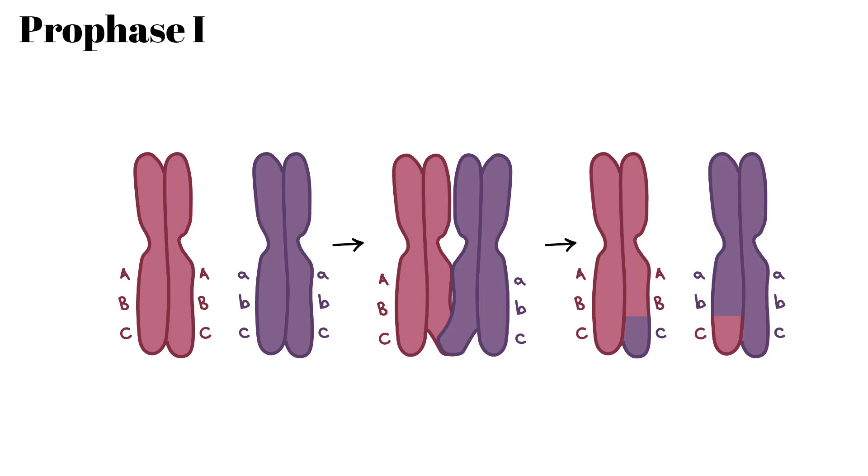Once the cell is done with interphase, it enters prophase. This is where meiosis starts. Prophase has two steps. The first step is called synapsis. This is where the chromosomes begin to condense and pair up. Each chromosome lines up with its homologue pairs, so that each of the genes are lined up with a corresponding gene on the other chromosome. These groups are called tetrads.